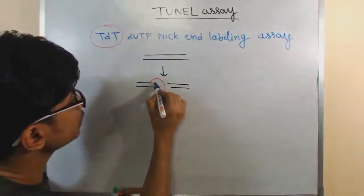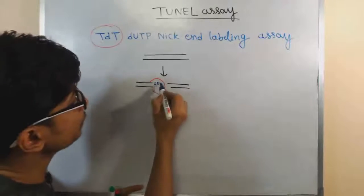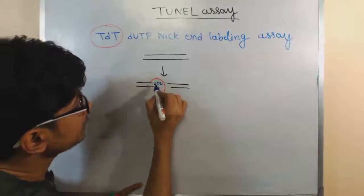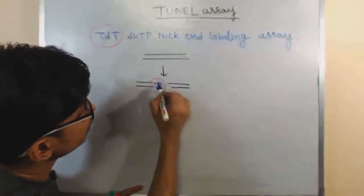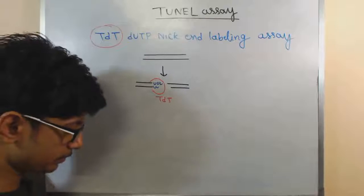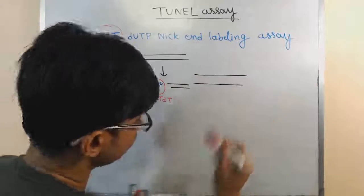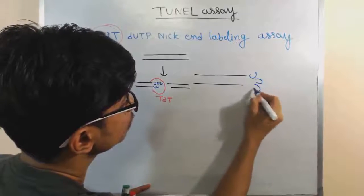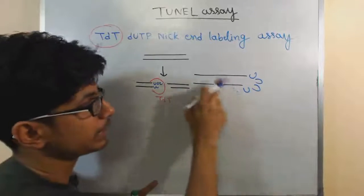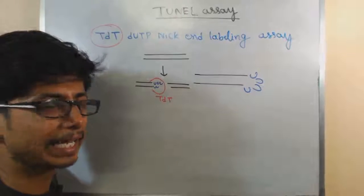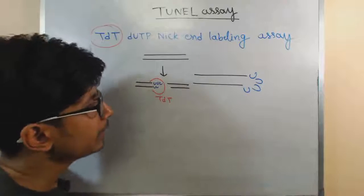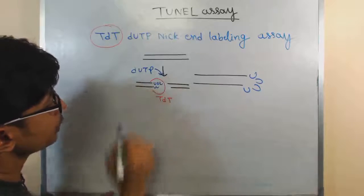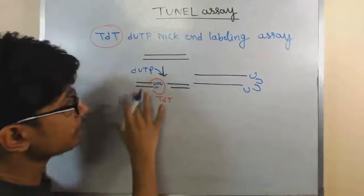So, what it will do, it will transfer this dUTP there at the terminal region and they start to form what we call a loop. So, let's say here, if I draw it slightly larger, start adding all those U to form a kind of loop-like structure and can block the DNA like this. So, the actual idea here, they will add dUTP in this location.